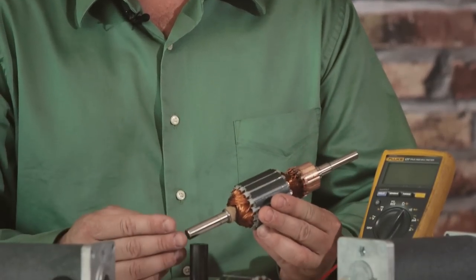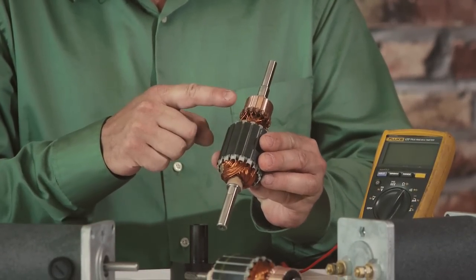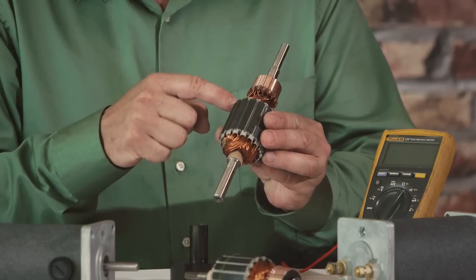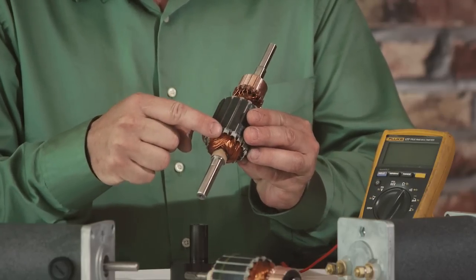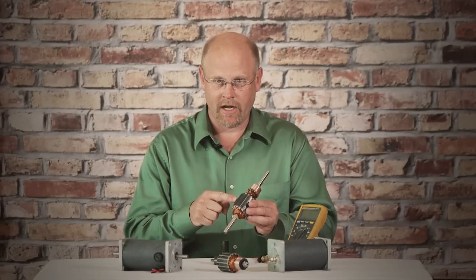On this armature, we have a shaft, a commutator, which has bars. The commutator bars are connected to the armature winding, and the winding is wound around teeth on the lamination stack.